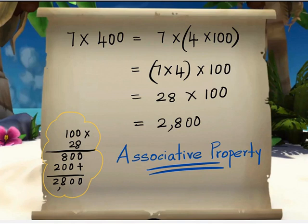Now let us learn about the associative property and solve 7 times 400. 7 times 400 can be written as 7 times 4 times 100. So in this step, we have written 400 as 4 times 100.